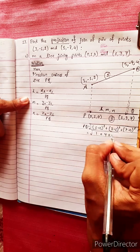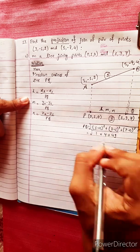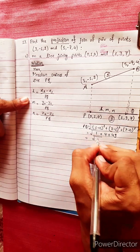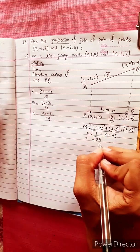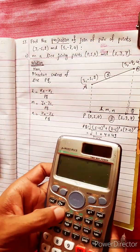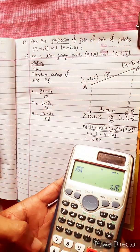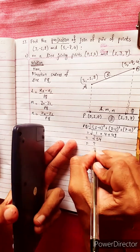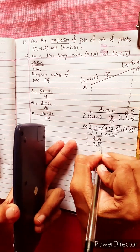This is 2 squared. This is 4, 7 — 7 is 49. 50 plus 4 is 54. Now, 54 — how much is this? 3 root 6. That is the first thing. 3 root 6.